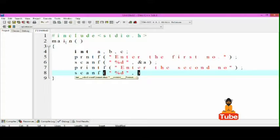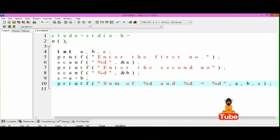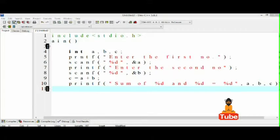Now I will printf, let's see, 'sum of %d and %d is equal to %d', comma a, comma b, comma c.